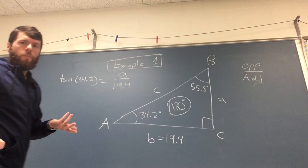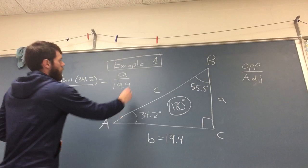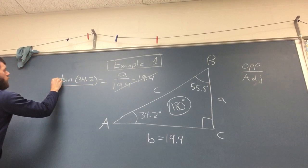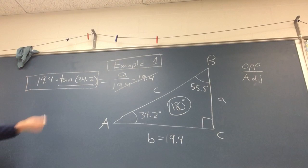It's not a hard problem to solve. This is just something you plug into your calculator, you'll get a decimal, and then to solve for A we multiply by 19.4 on both sides, cancel out, multiply this by 19.4. And this, whatever it is, will be your A. And I think it turns out that A is 13.18.